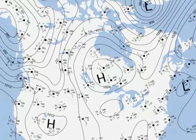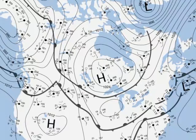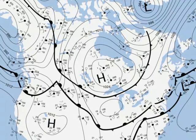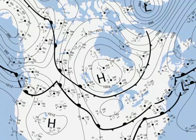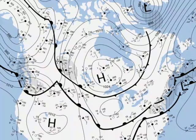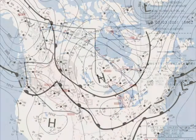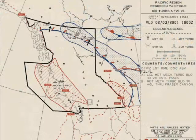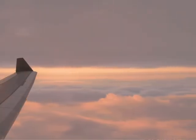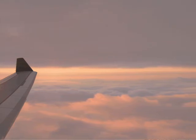Weather maps also show the lines along which different air masses meet, and regions where precipitation is occurring. Weather maps are particularly useful to aviators and navigators, who can chart their itineraries to avoid storms.